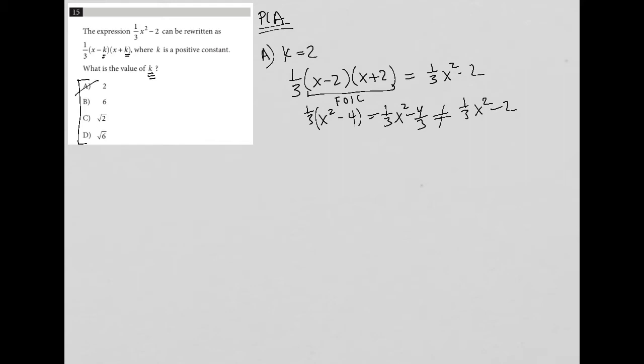So answer choice A is gone. Answer choice B says that k is equal to 6. So is it true that 1/3(x - 6)(x + 6) is equal to our 1/3 x² - 2? This is also not going to work. x minus 6 times x plus 6 is equal to x² - 36. And we have 1/3 out in front of that, which means this will turn into 1/3 x² minus, what is 1/3 of 36? 1/3 of 36 is 12. So 1/3 x² - 12, which is not equal to 1/3 x² - 2. So B is also gone.